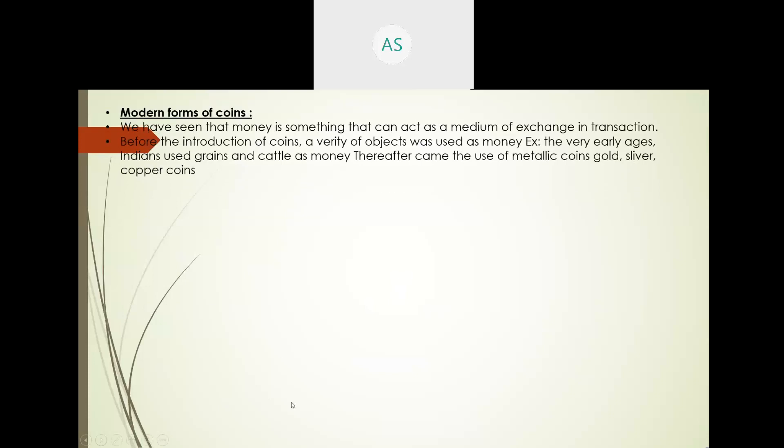Money is something that can act as a medium of exchange in a transaction to exchange goods and services. Before the introduction of coins, a variety of objects were used as money. In very early ages, Indians used grains and cattle as a form of money to exchange commodities. After that, they started using metallic coins — gold, silver, and copper coins. I have shown a picture about the monetary system from the ancient period to modern currencies.